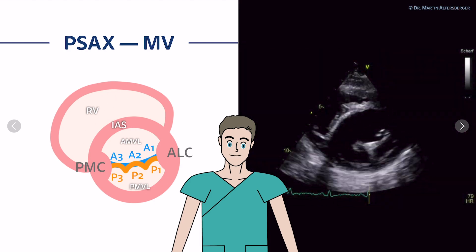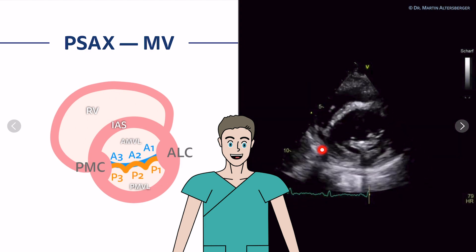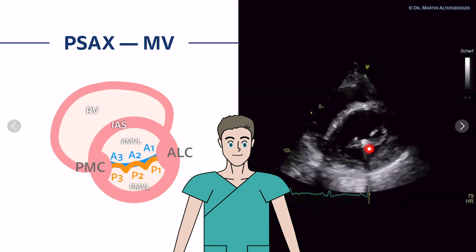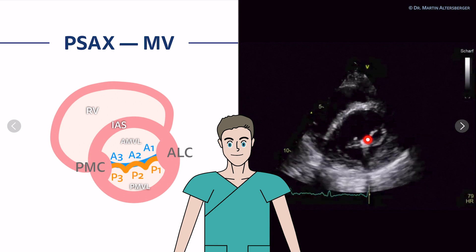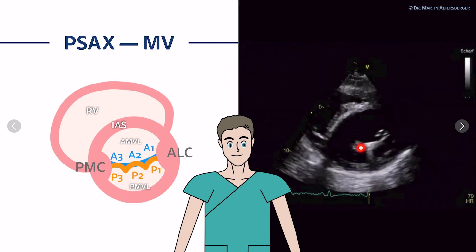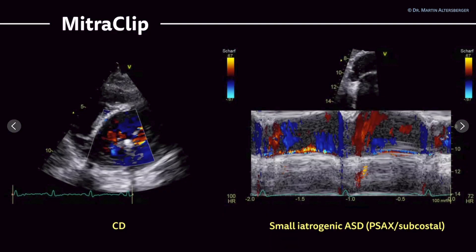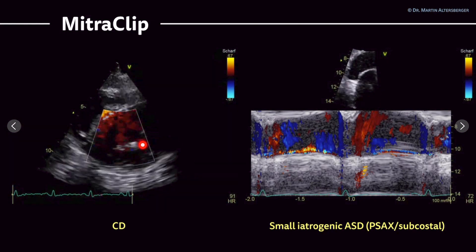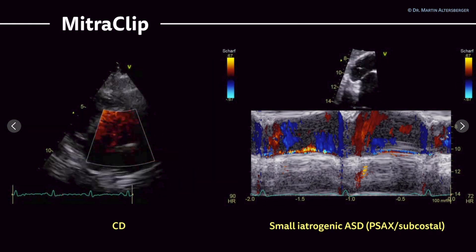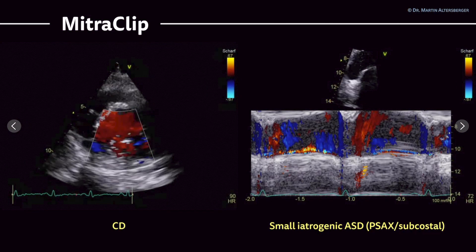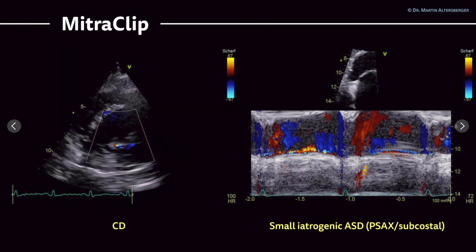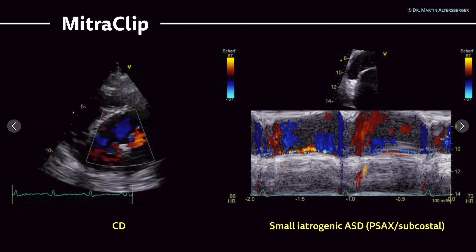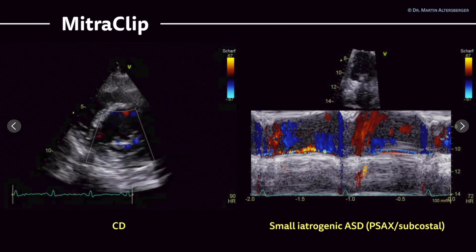Moving on to the mitral valve: we have the anterolateral and posteromedial commissures and can see all segments of the mitral valve. In this case, there is an echogenic structure in the area of A2 and P2 — most likely a mitral clip. The opening of the mitral valve is reduced, but mitral regurgitation is definitely not severe anymore, with only a residual MR jet visible. This patient was clipped due to severe mitral regurgitation. Additionally, since a mitral clip procedure requires crossing the interatrial septum, we can see a small iatrogenic atrial septal defect (ASD), which can be assessed in the parasternal short axis or from a subcostal approach.